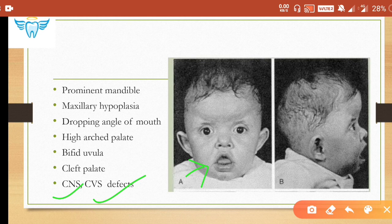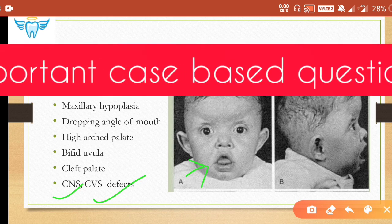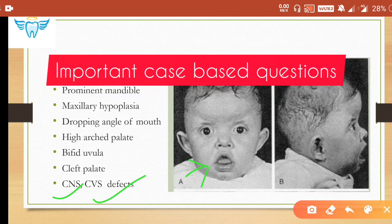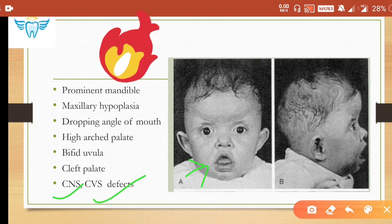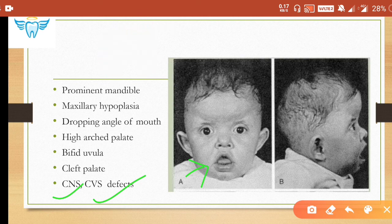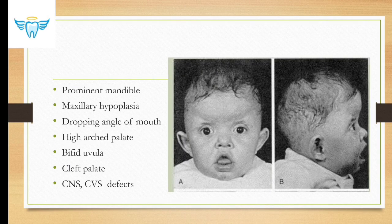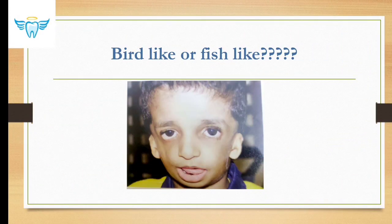You must be very thorough with the clinical features of all these syndromes because they may appear as case-based questions — for example, a child presenting with prominent mandible, maxillary hypoplasia, drooping angle of mouth, depressed nasal bridge, and low-set ears, asking which syndrome the patient has. Pictures of these syndromes can also be asked in image-based questions.